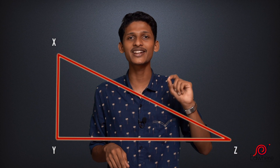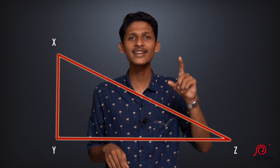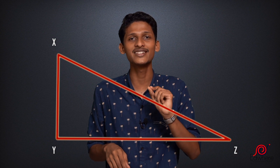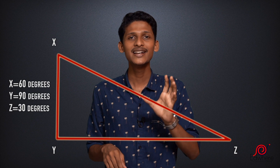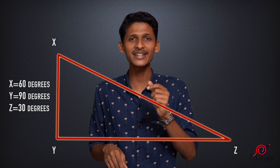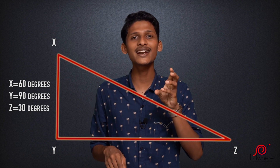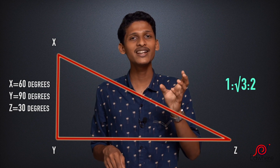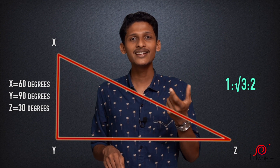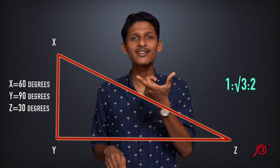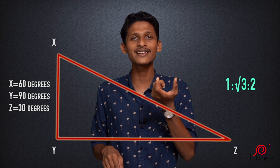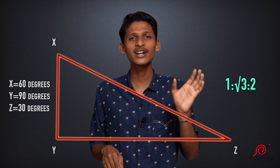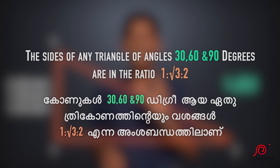This is triangle XYZ. The X angle is 60 degrees, Y angle is 90 degrees, and the other angle is 30 degrees. So for a 30-60-90 triangle, the sides are in a different ratio. We have 45-45-90 angles giving ratio 1 to 1 to root 2, and 30-60-90 angles.